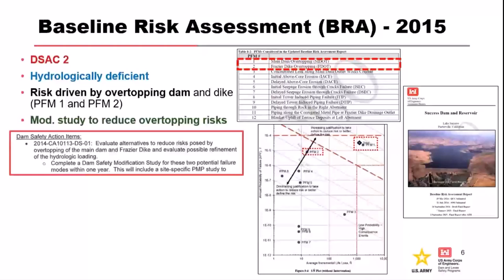Back in 2015, we did a baseline risk assessment — a screening risk assessment tool. The outcome told the Corps that we had a project where the total risk plotted above our TRG, our total risk guidelines, and pretty close to individual risk. So this was a pretty high priority project, driven primarily by overtopping, with a bunch of internal erosion failure modes as well — placing it at DSAC-2, a high priority structure.